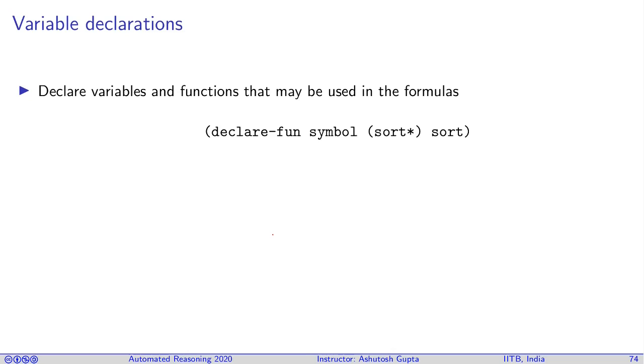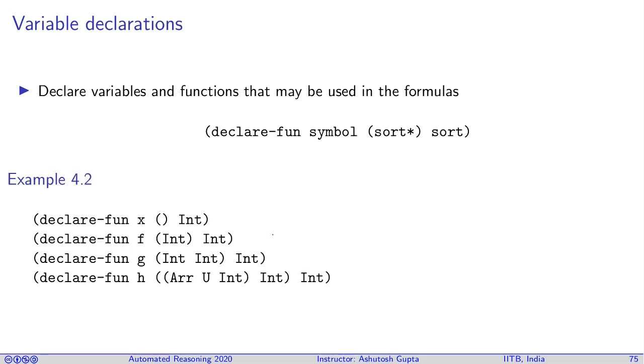Now, once you have sorts, you can declare new variables and symbols or functions. For example, you can declare a single variable x which takes no parameter as input and its type is integer. f is a function which takes one parameter as input and returns another parameter.